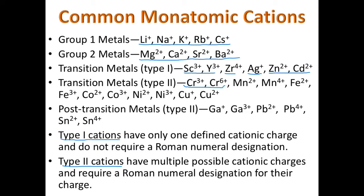The post-transition metals are also Type 2 metals — a small group of metals on the periodic table just after the transition metals. They are gallium, indium, tin, thallium, lead, and bismuth. Note that aluminum, in Group 13 above the post-transition metals, is a 3+ monatomic cation that is Type 1.